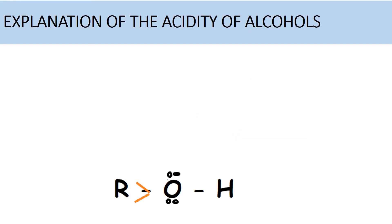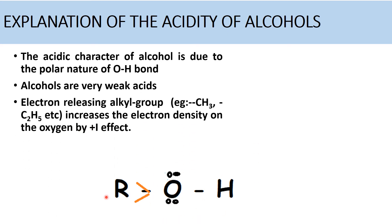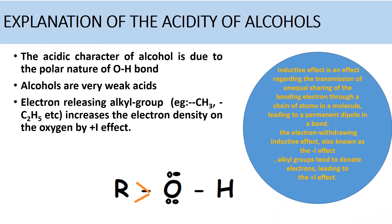The acidic character of alcohol is due to the polar nature of the OH bond, but alcohol is a very weak acid. The electron-releasing effect of the alkyl group — the R group, which may be a methyl, ethyl, or propyl group — increases the electron density on the oxygen by the plus I effect. The inductive effect is the transmission of unequal sharing of bonding electrons through a chain of atoms in a molecule, leading to a permanent dipole in a bond. The electron-withdrawing inductive effect is the minus I effect, but in the case of alcohols it is the plus I effect.